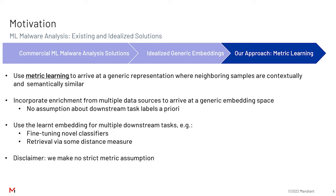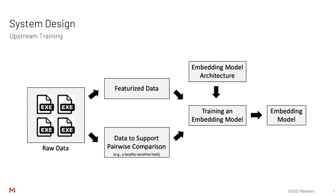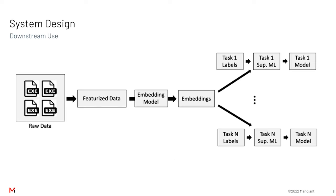I make a slight disclaimer: when people hear metric learning, they may think we're talking strictly about strict metrics and metric spaces — we are not making any such assumption here. At a high level, here is our system design in schematic form. The binaries are featurized, and data is extracted to support pairwise comparisons. This data is used in conjunction with the featurized data to train an embedding model, and the generated embedding model can be applied to multiple downstream tasks.